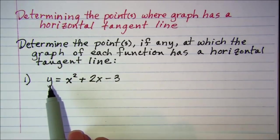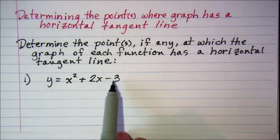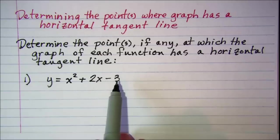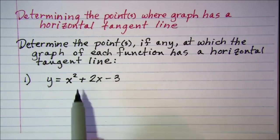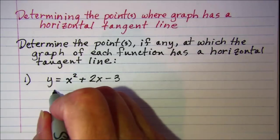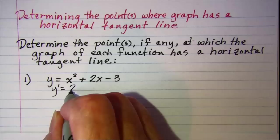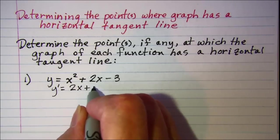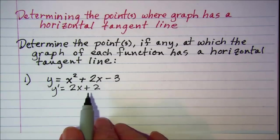Our function is y equals x squared plus 2x minus 3. So in order to find the points at which the graph has a horizontal tangent line, we need to first find the derivative and then set that derivative equal to 0.